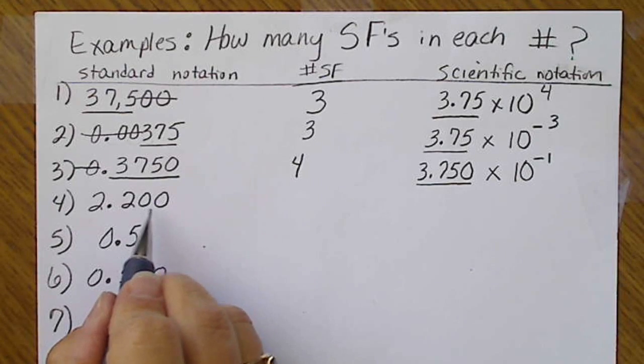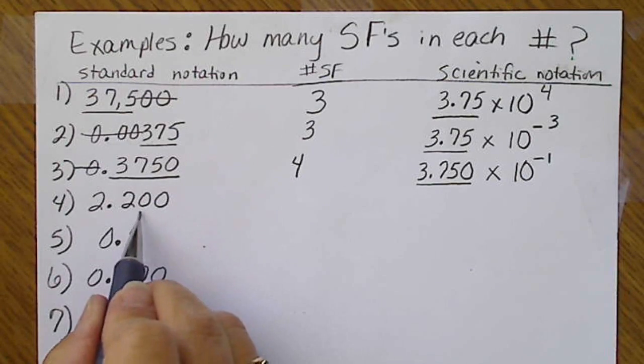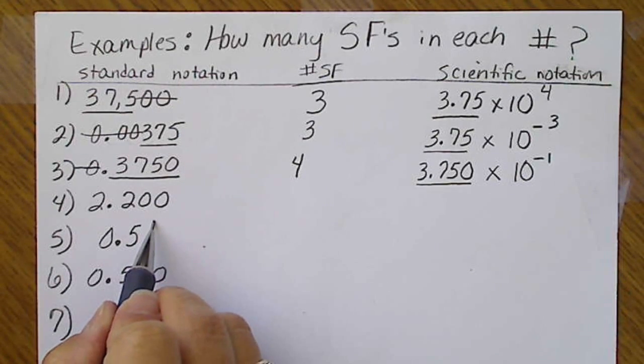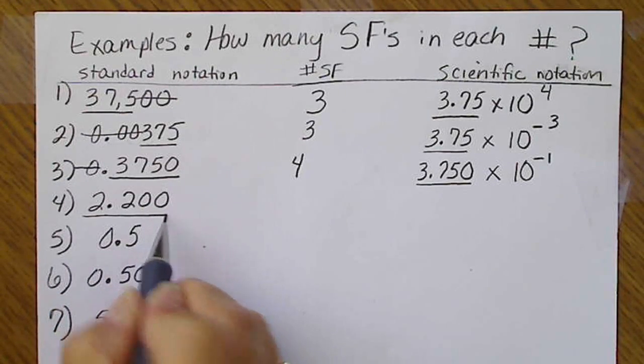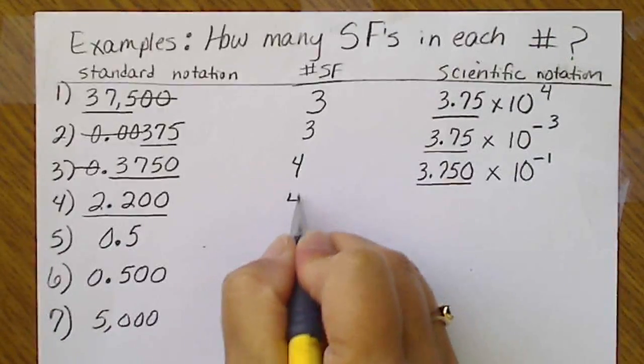Here, these zeros will not be crossed out because zeros at the end of a number count as long as there's a decimal anywhere in the number. So all four of those values are also significant.